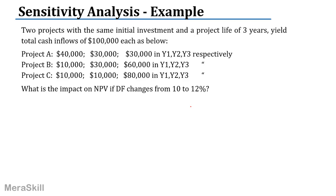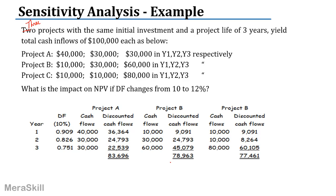What is the impact on NPV if the discount factor changes from 10 to 12 percent? At 10 percent, for project A, multiplying by the discount factor gives discounted cash flows of 83,696; 78,966; and 77,461. Project B is also discounted at 10 percent in the same way.